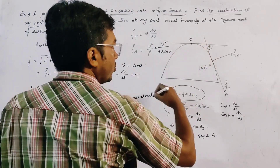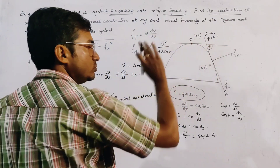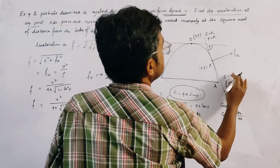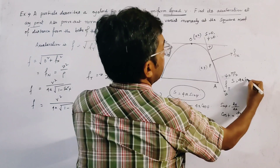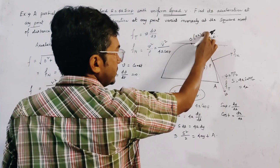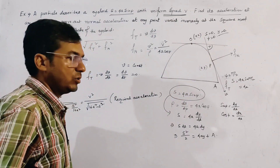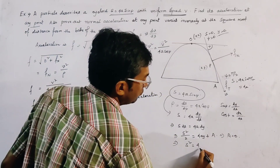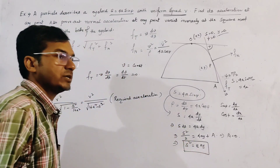At the vertex O(0, 0), s = 0 and ψ = 0. At the cusp, ψ = π/2, and then s = 4a sin(π/2) = 4a. Applying the initial condition s = 0 and Y = 0, we get K = 0, giving us the important relation s² = 8aY.